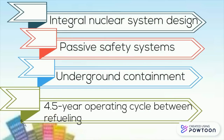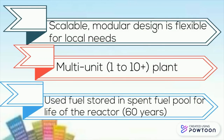Features of the mPower reactor include: an industrial nuclear system with passive safety systems; underground containment; a 4.5-year operating cycle between refueling; and a modular design that is flexible for local needs.